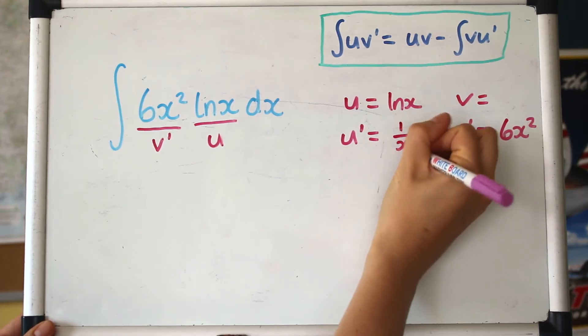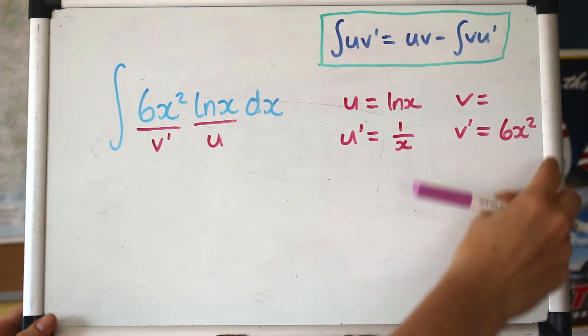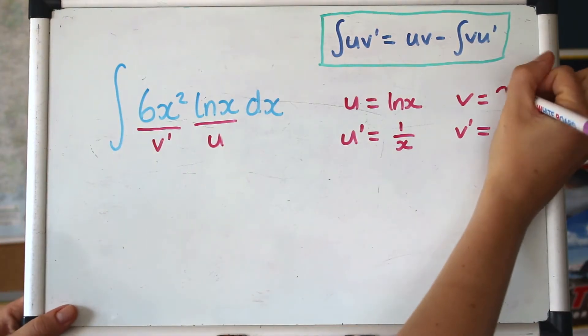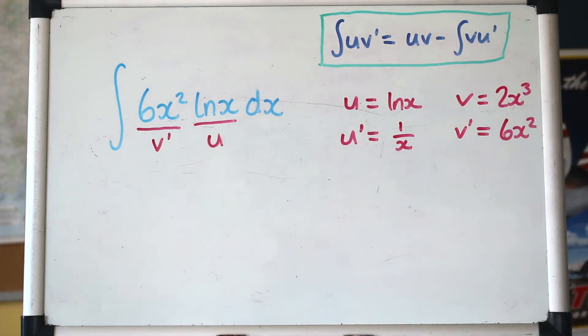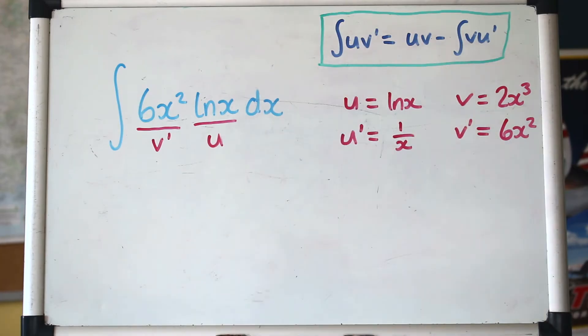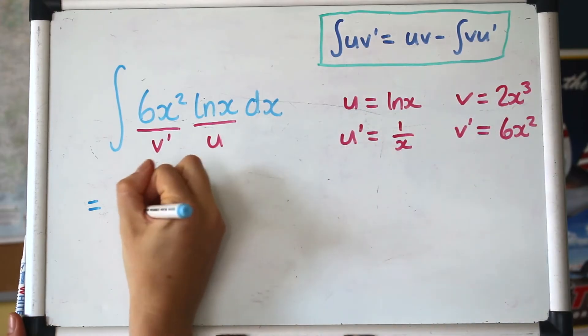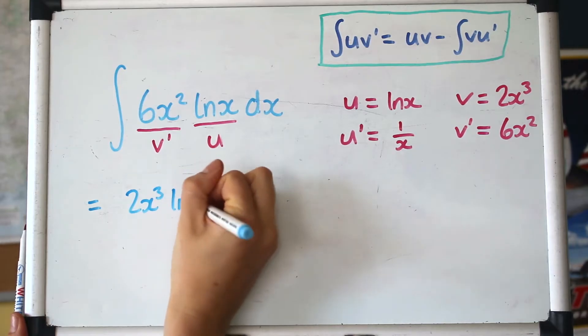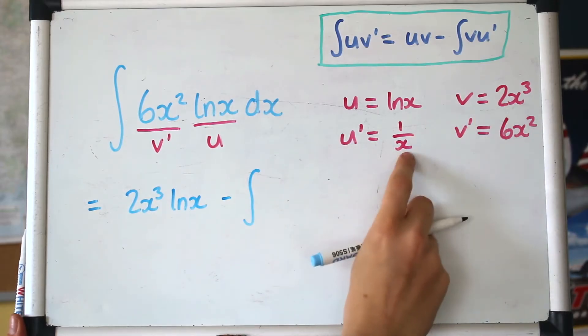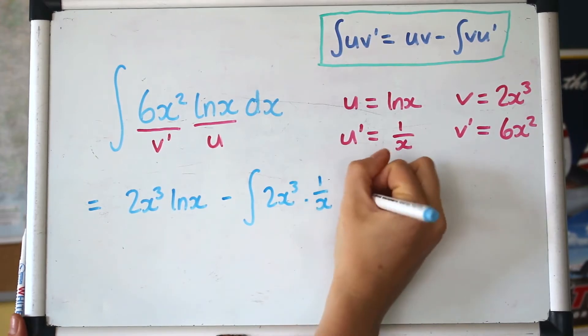Now we need to fill in the rest of the information. So we want u dash which means we differentiate that and hopefully you know that's 1 over x. Now we want v. So we've already got the derivative of 6x squared, we want to go the opposite way, we want to integrate that. So that's a straightforward integration. Hopefully you can do that without too much problem. 2x cubed. Now that we've filled in those pieces, we're just putting them into the formula. So we've got u times v. That's log of x times 2x cubed. I'm going to write the 2x cubed first just because that's convention and then minus the integral of v u dash. So 2x cubed times, I'll just put a dot for times, 1 over x with respect to x.